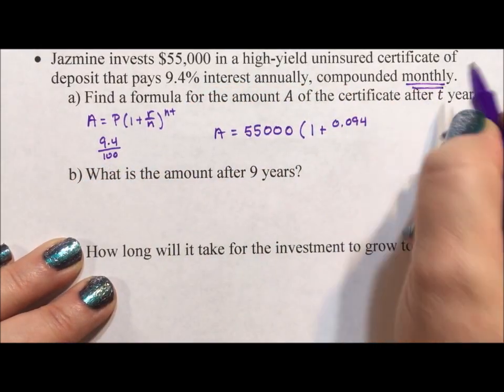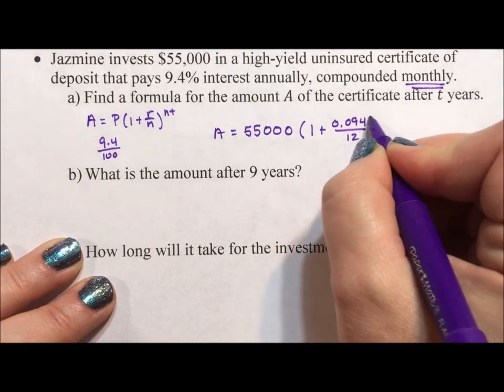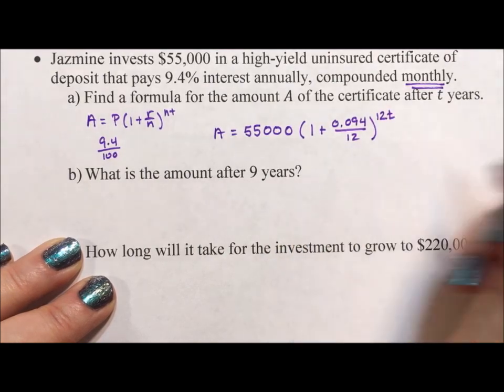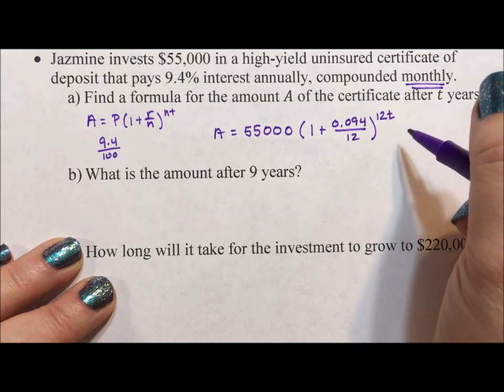N is the number of times per year. Monthly is 12 to the 12T, because we need a variable somewhere. Okay, so there's our formula.